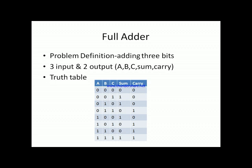When two ones appear in the input combination, for example 0+1+1: the result is binary 10, so 0 is entered in the sum column and 1 in the carry column, because 1+1=10 — the zero is the actual sum value and the one is the carry to the next position. We continue this for all remaining input combinations.